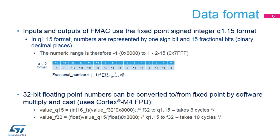Inputs and outputs of FMAC use the fixed-point signed integer Q1.15 format. In Q1.15 format, the numeric range is −1 or 0x8000 to 1 minus 2 to the negative 15 power or 0x7FFF. 32-bit single-precision floating-point numbers can be converted to or from Q1.15 format by dedicated conversion instructions executed in the Cortex-M4 FPU.